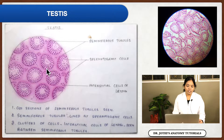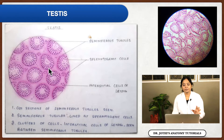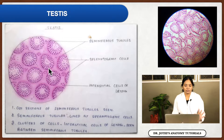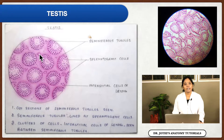You will see supporting cells for these spermatogonia. All the spermatogonia are resting on one larger cell, otherwise called Sertoli cells. Sertoli cells are the supporting cells for the seminiferous tubules. Other than the seminiferous tubules, you will see the interstitium of the testis. In the interstitium, you will see another special type of cell, otherwise called the interstitial cells of Leydig.